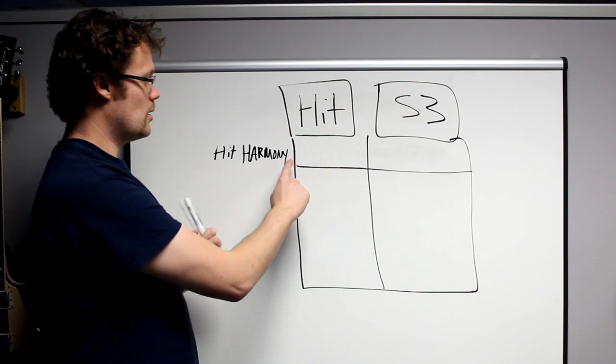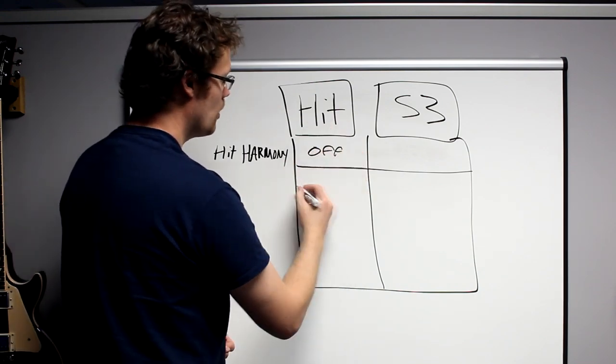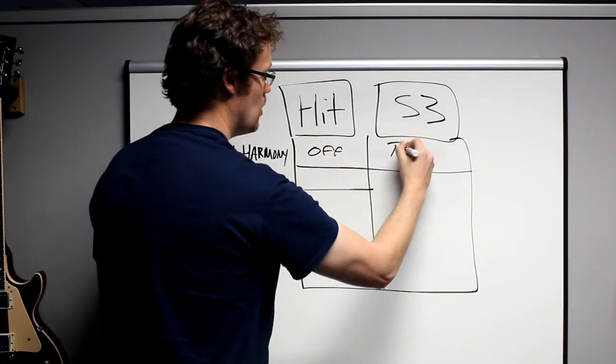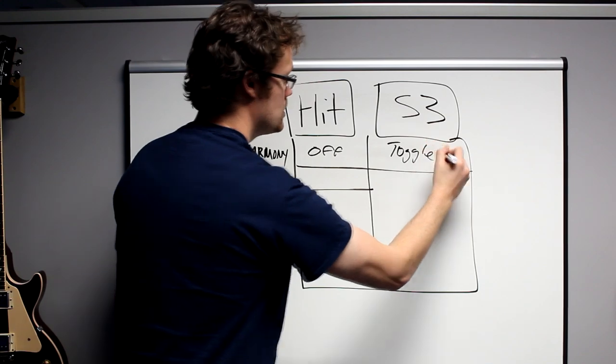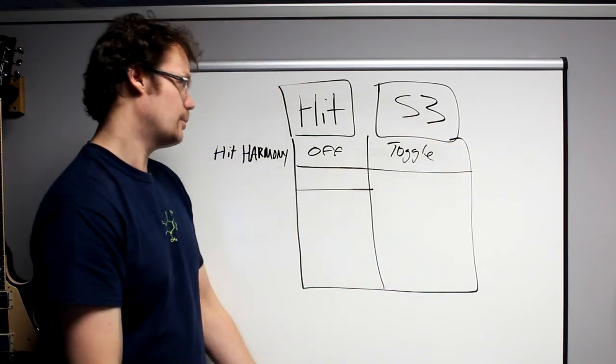So we've got Hit Harmony. If Hit is off, our Harmony is off. The Switch 3 can toggle at that point. So I can press the button, Harmony comes off, Harmony goes on, Harmony comes off, Harmony goes on, Harmony goes off. Okay.